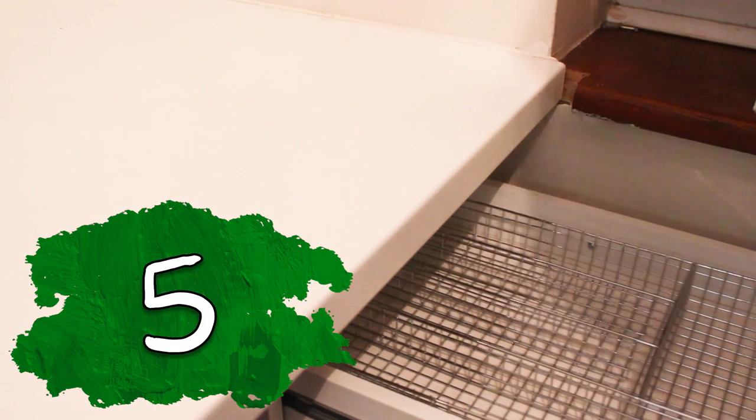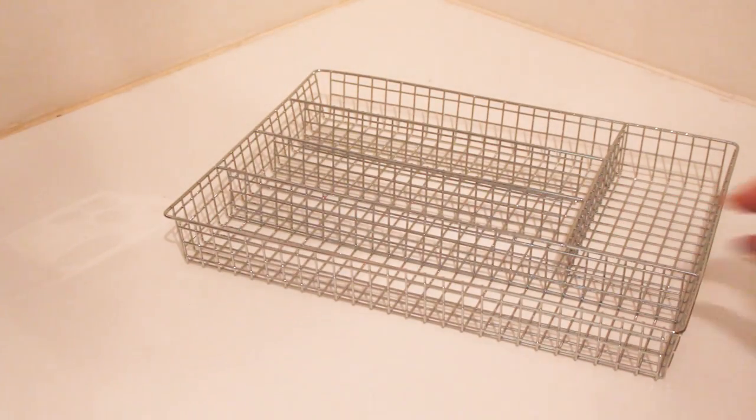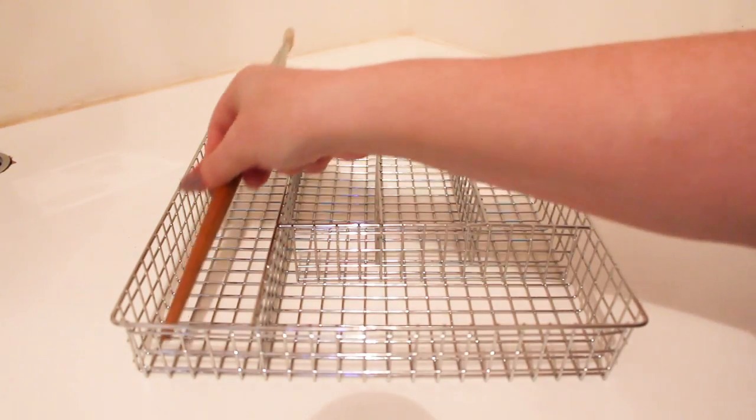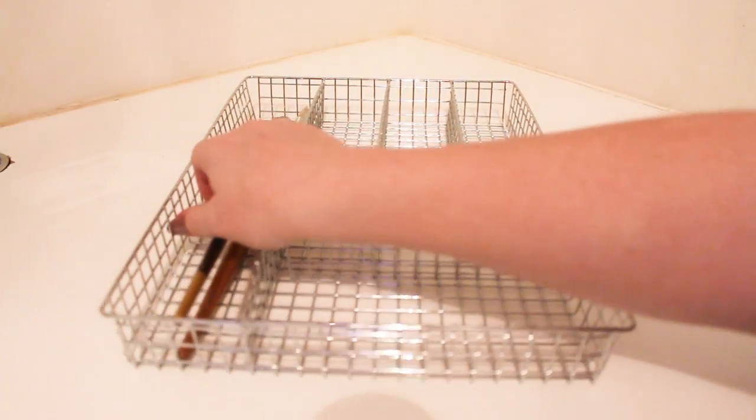Number five is a cutlery tray and I can't believe I never thought of this before, but a cutlery tray is perfect especially if you want to divide up your brushes into different types. So you've got a long area for your really long brushes, a smaller area for your smaller brushes.